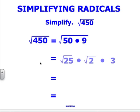Such as the square root of 25 times the square root of 2. That gives me the square root of 50. The 3 came from the square root of 9.